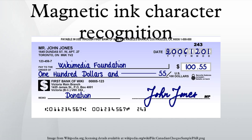The MICR E13B font has been adopted as the international standard in ISO 1004-1995, but the CMC7 font is widely used in Europe. There are two major MICR fonts in use: E13B and CMC7. E13B has a 14-character set, while CMC7 has 15 characters — the 10 numeric characters plus control characters. The MICR E13B font is the standard in Australia, Canada, the United Kingdom, the United States, and other countries.